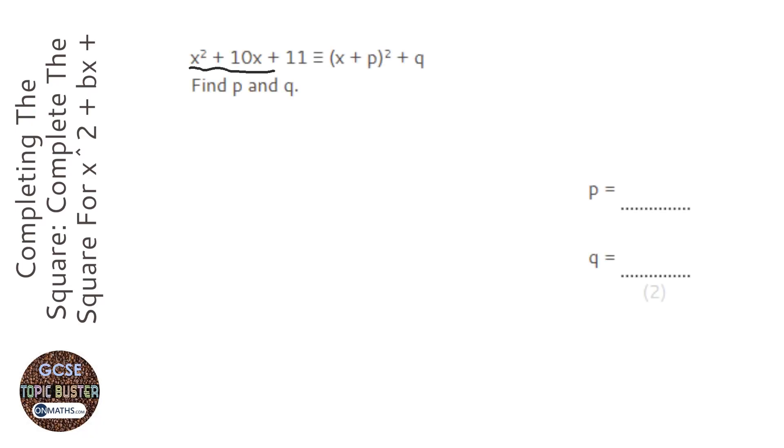This question asks us to rearrange this expression to make it in this form here. We're not going to use the bit in red at all in our answer, it's just there as a guide of what we're looking at getting. And this sign here just means it's completely equivalent to, so it works for any value of x.